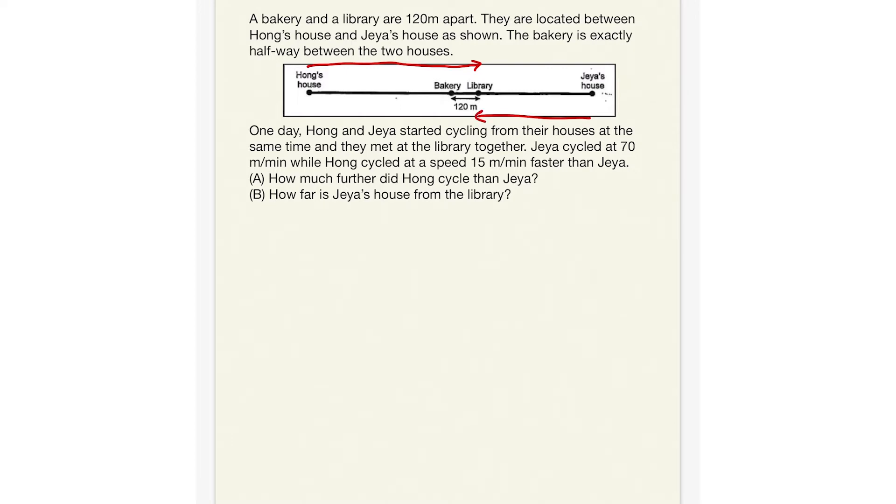So in this case over here, let's say they were traveling along the same route. Hong and Jaya. Hong traveled this much while Jaya traveled this much. And let's say I'm going to write the arrows in, you can see. Okay, so Hong had to travel an extra 120 meters past the bakery to be able to reach the library while Jaya has to travel actually a little less by 120 meters because she is 120 meters in front of the bakery.